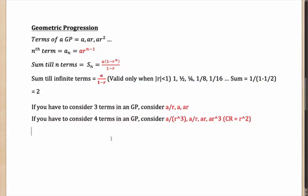Similar to AP, when considering 3 terms in a GP, instead of A, AR, AR², try A/R, A, A×R — it may be easier. For 4 terms, use A/R³, A/R, A×R, A×R³ where the common ratio is R², not R. Multiplying all four gives A⁴, and multiplying three terms gives A³ — small tricks that can save time in an exam.